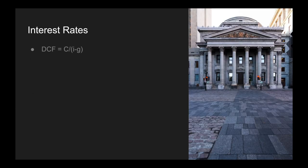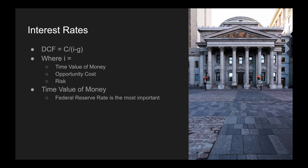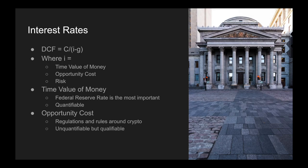When it comes to interest rates, we've got a discounted cash flow model that is very simple mathematically. But the parameters are where it gets complicated — interest rate is time value of money plus opportunity cost plus risk. The time value of money, specifically the Federal Reserve rate, is quantifiable — you can go onto the internet and see exactly what percent it is. However, with opportunity cost and risk, these are unquantifiable but qualifiable — you know when opportunity costs are high or low relatively, and you know when risk is increasing or decreasing, even if you can't put an exact number on them.